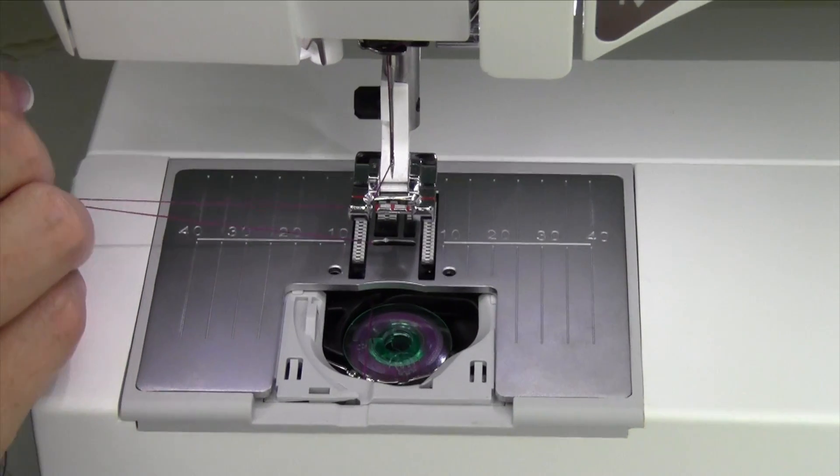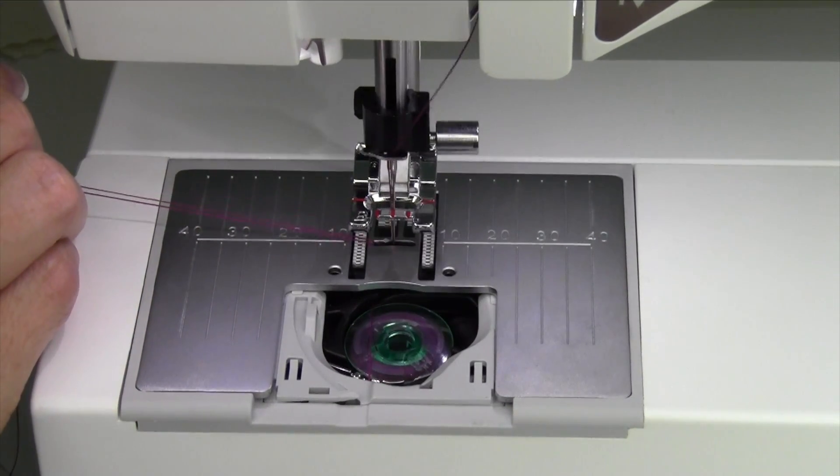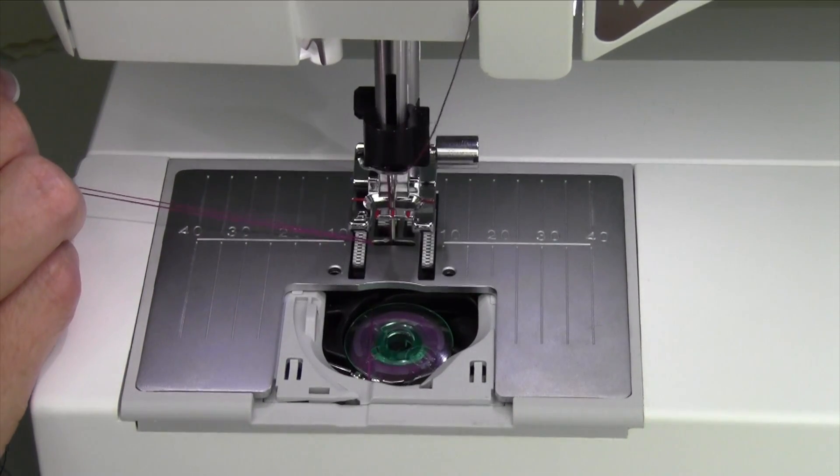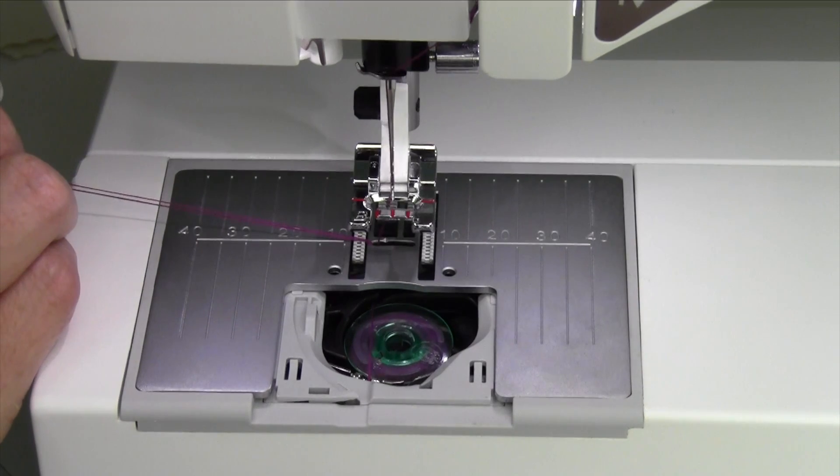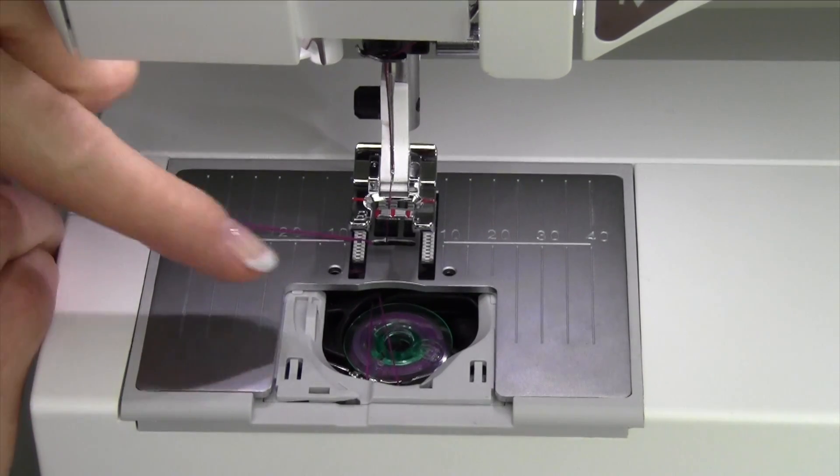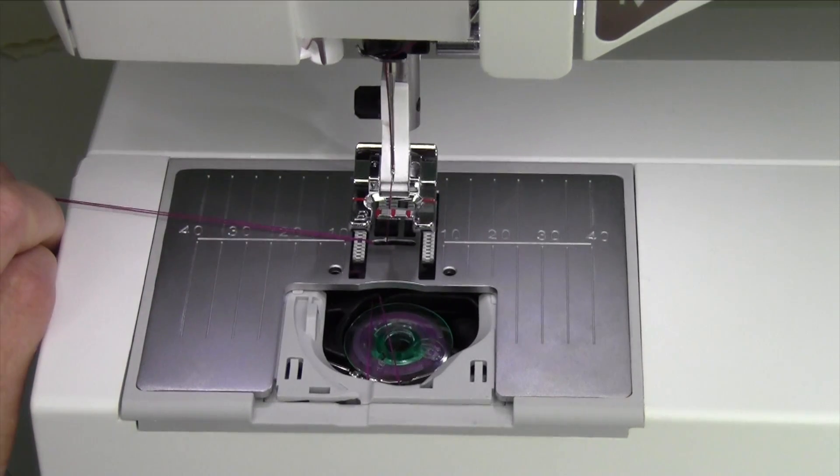Now, I'm going to turn the hand wheel by hand and sink the needle down. Now what you're going to see is as that needle comes up, you're going to see another bit of thread coming over the top of the bobbin.